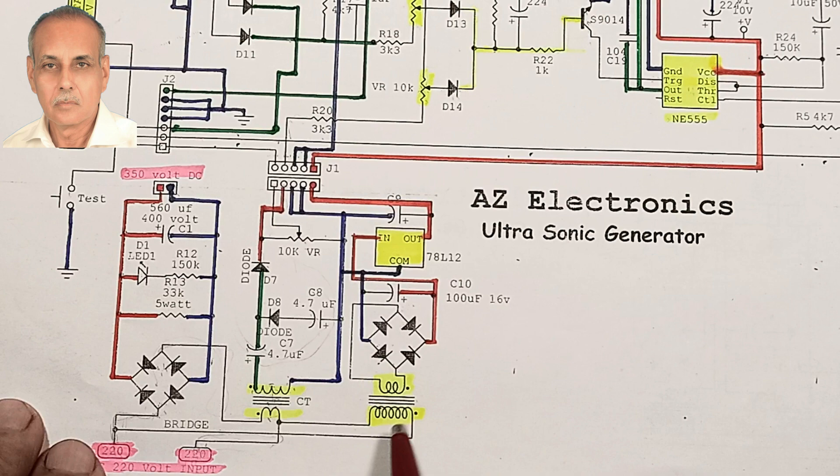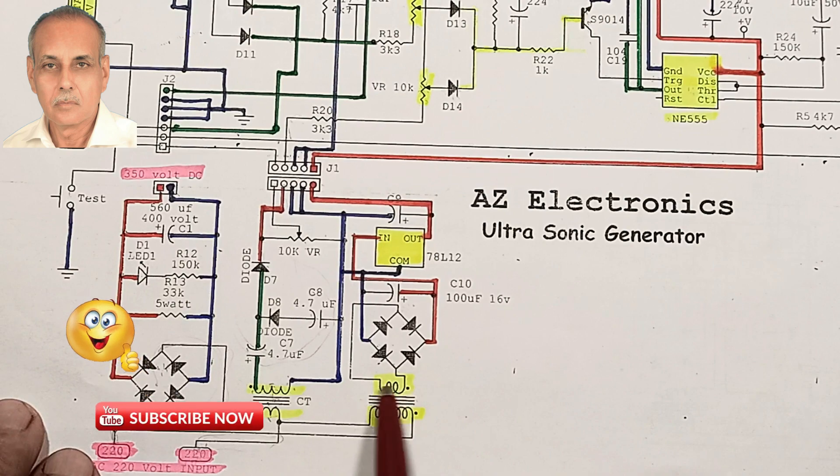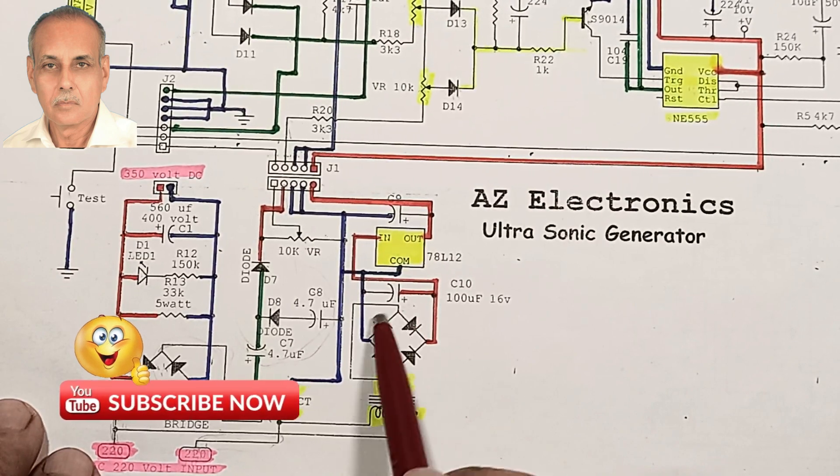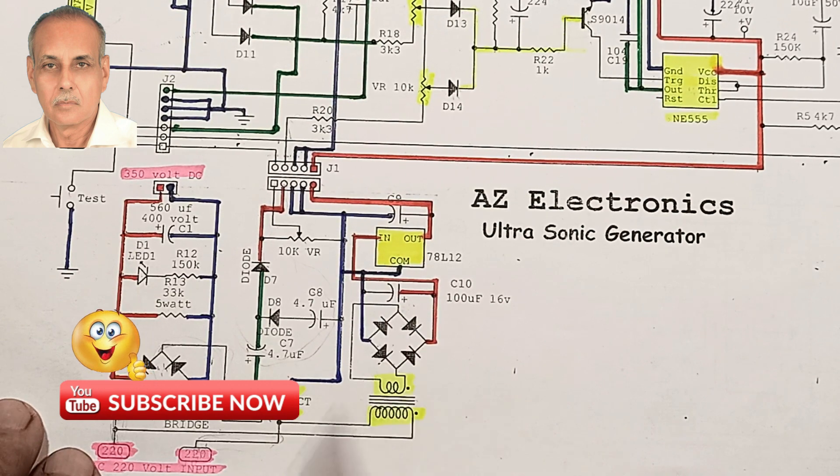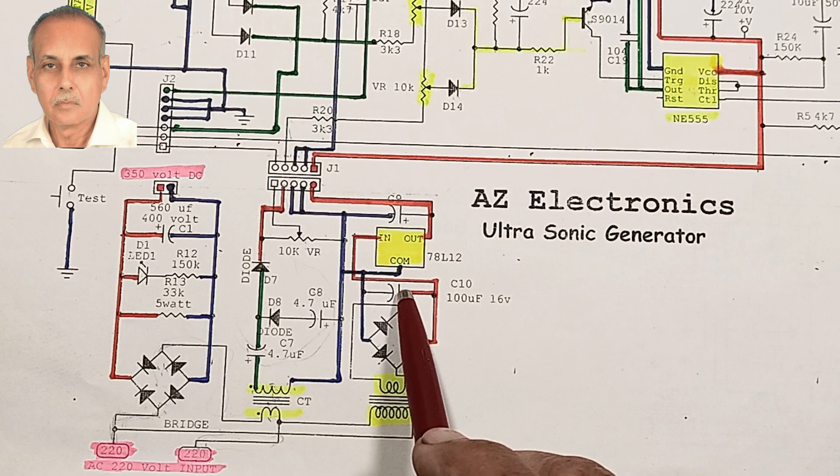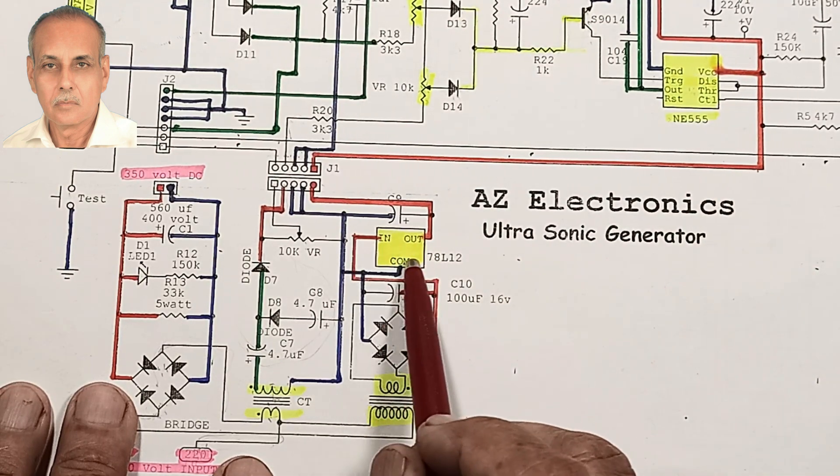220 volts is increased to 350 volts. Here you can see this transformer is a 220 volt to 12 volt transformer, which means it is taking 220 volt and giving 12 volt output. The output of this transformer is rectified inside a bridge rectifier and filtered through a capacitor.